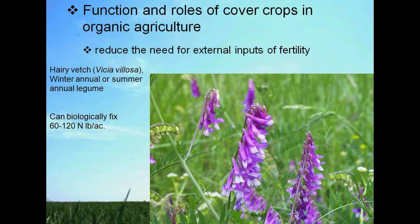Continuing with ways that cover crops can reduce the need for external inputs, we have an example of a legume here — hairy vetch, which is a winter annual legume, sometimes summer annual. It can biologically fix between 60 and 120 pounds of nitrogen per year.